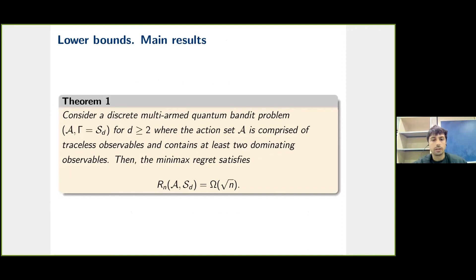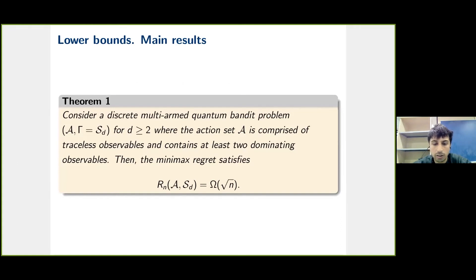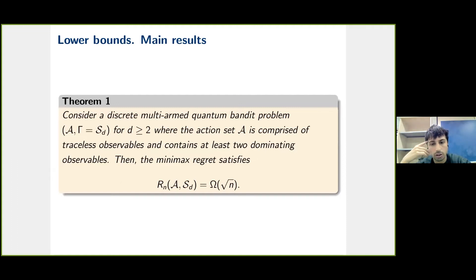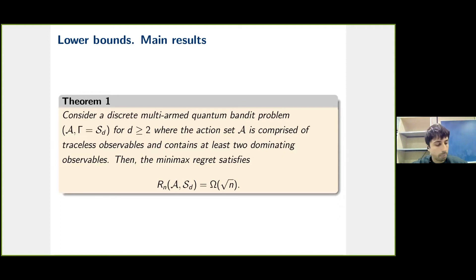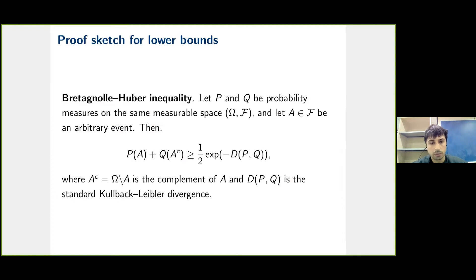Our first result: for a discrete multi-armed quantum bandit with k ≥ 2, where the action set contains traceless observables and at least two dominating observables, the minimax regret has a lower bound that scales as √N. This general result has no dependence on dimension or number of observables, because we haven't imposed much structure on the action set. Further results with dimensional dependence will follow.